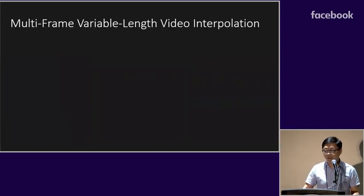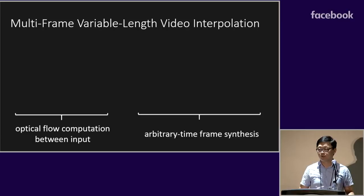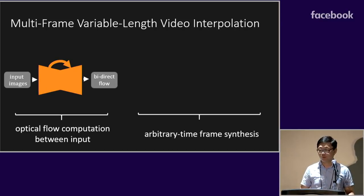So bearing these ideas in mind, we have network design of our super slow-mo consisting of two major parts. In the first part, given two input images, we have a neural network to predict bidirectional optical flow between them.